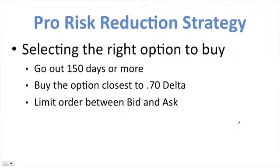Select the right option to buy. You would go out and pick an option that has 150 days till expiration. It could be a little bit less, or it could definitely be more, but we're going to target 150 days as a good option. We're going to buy the option with a delta closest to 0.70. Delta is the rate of change of an option, and we're going to pick one that is around 0.7. We'll use a limit order whenever we buy these options.